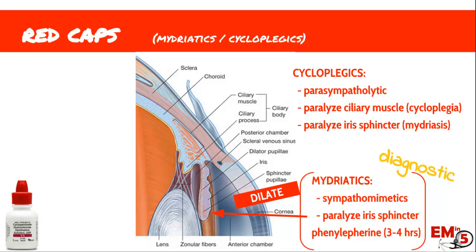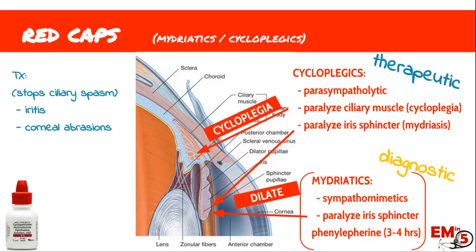Cycloplegics are parasympatholytic. They paralyze the iris sphincter, causing mydriasis, and they also cause cycloplegia through paralyzing the ciliary muscle. The reason we use these a lot is because they're therapeutic. We use them a lot in iritis and uveitis, where patients are having that ciliary spasm every time light hits their eye — they have severe photophobia and their eye is very painful. We can also use it in corneal abrasions a little bit, but this is a good medication to prescribe for uveitis or iritis.